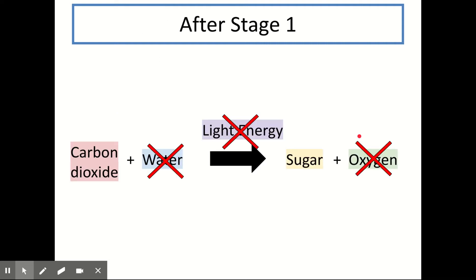After stage 1, this is how our summary looks. We've talked about water being split, light energy from the sun being converted into chemical energy, and how oxygen is produced and diffuses out of the cell. We still need to talk about carbon dioxide and sugar, which takes us on to stage 2.